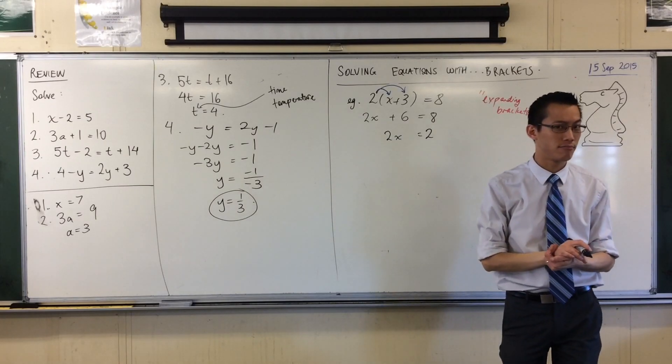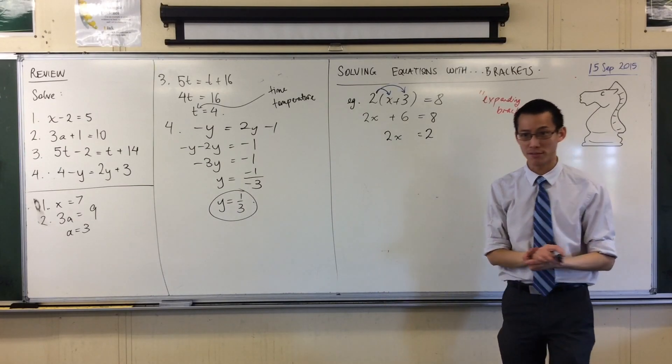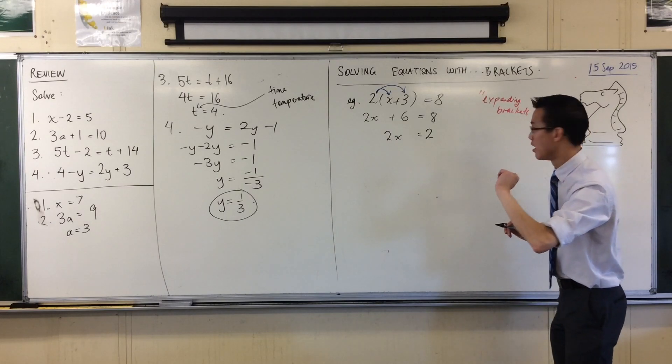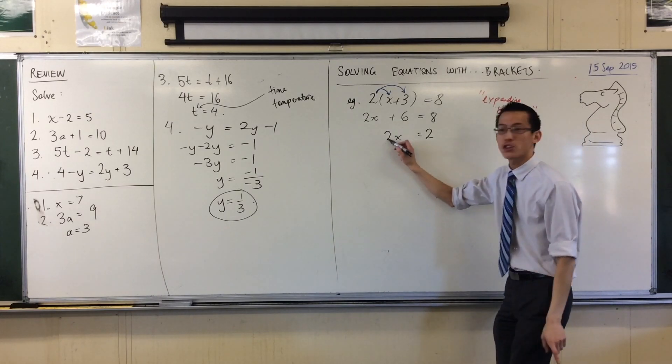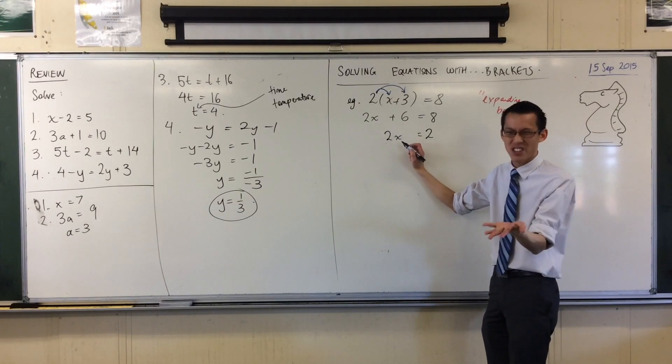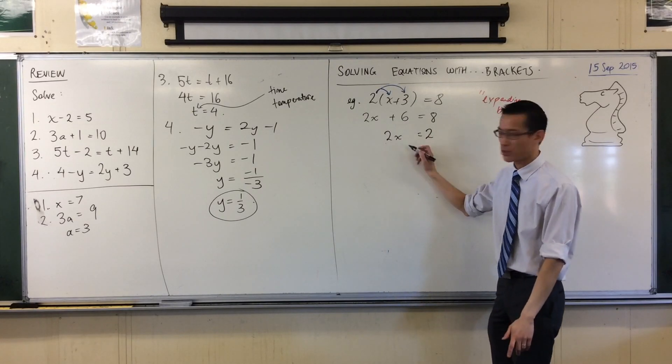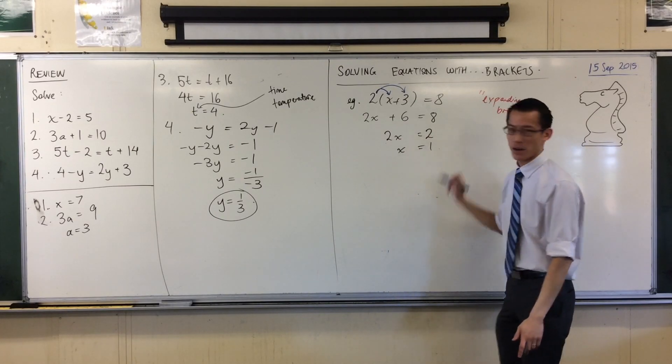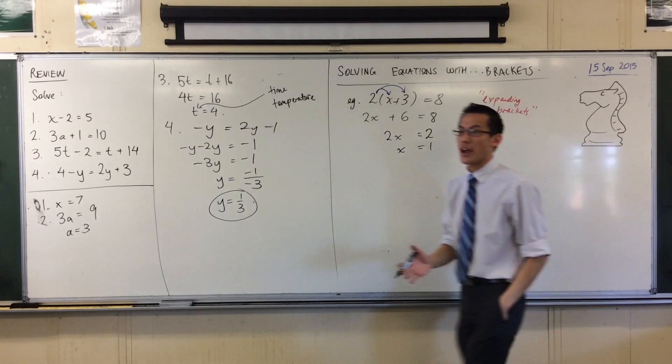So, one more line. What should I do to both sides? What operation? This is 2x, so I should divide. I should divide both by 2. That gives me 1. Now, that's great.